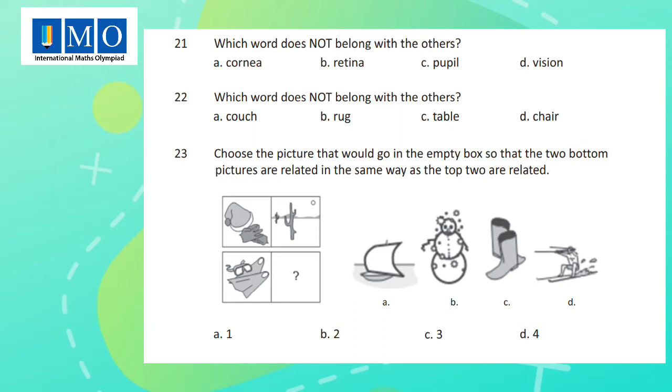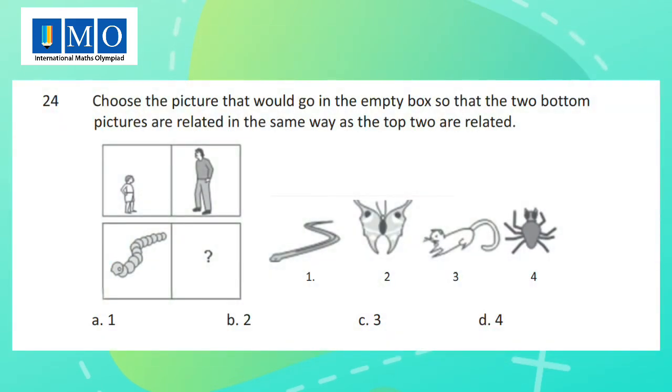Question 23: Choose the picture that would go in the empty box so that the two bottom pictures are related in the same way as the top two are related. Question 24: Choose the picture that would go in the empty box so that the two bottom pictures are related in the same way as the top two are related.